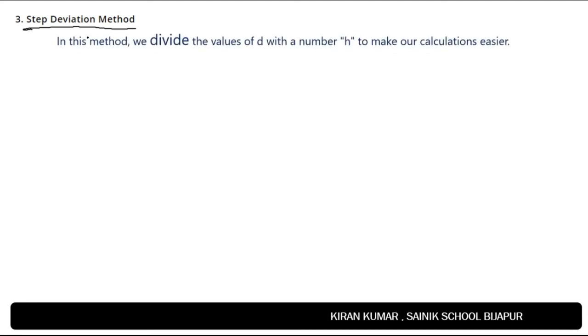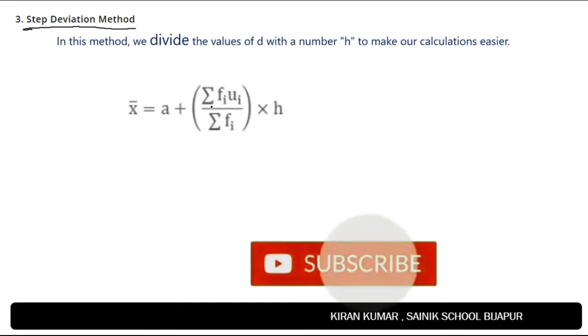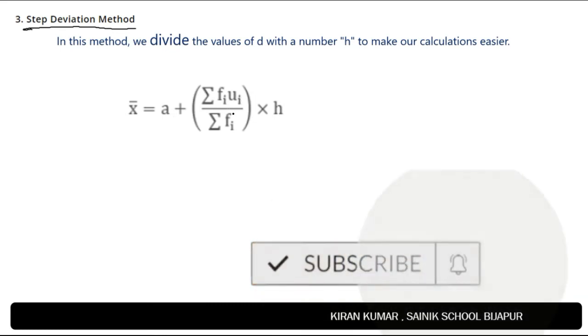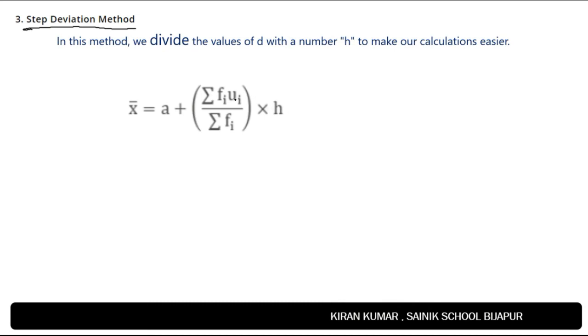The third method is called the step deviation method. This further reduces the complexity of the assumed mean method. We divide the deviation values by a constant number H to simplify calculations. The formula used is: x-bar = assumed mean + (sigma(fi × ui) / sigma(fi)) × H, where ui = (xi − A) / H. Let's take an example to understand this.